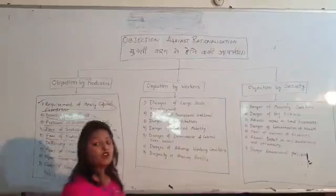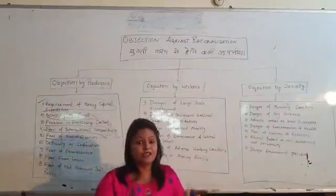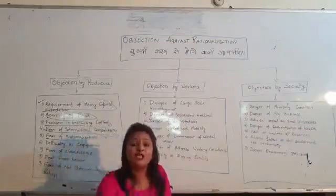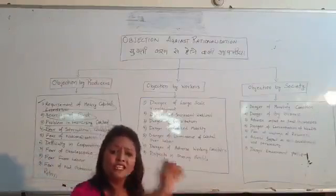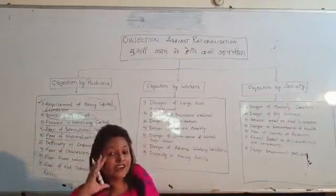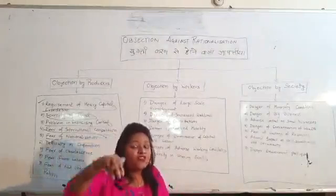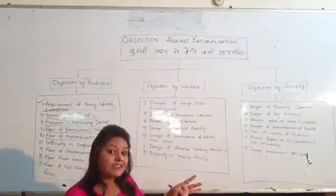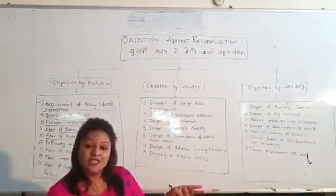Next is the fear of nationalization. The producer always has a fear of nationalization because a rationalized industry brings increased production, increased productivity, and increased profitability, and the industry controls the basic parts of the nation. The producer fears that when the rationalized industry gives such good profit and productivity, the government may take up the nationalization process.